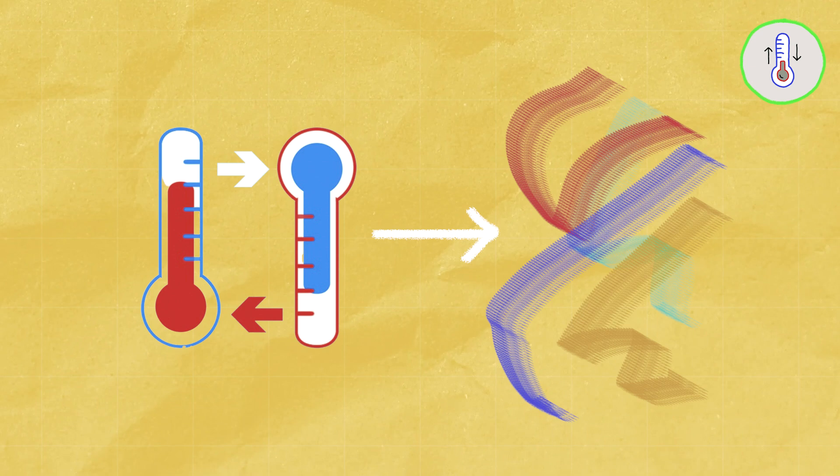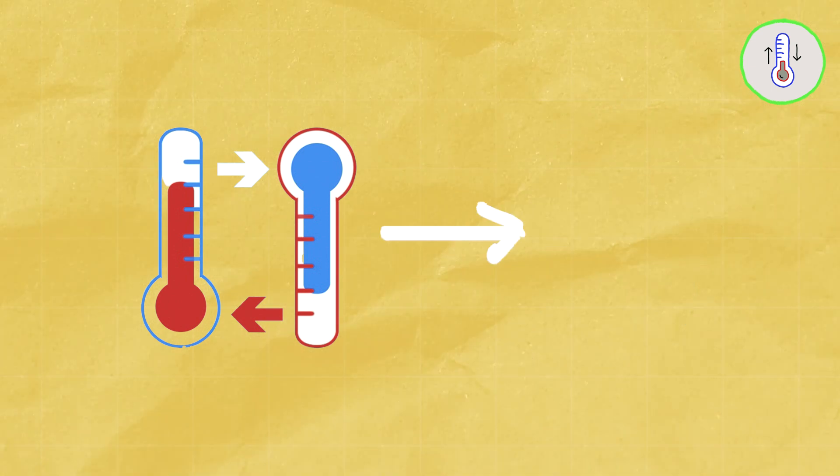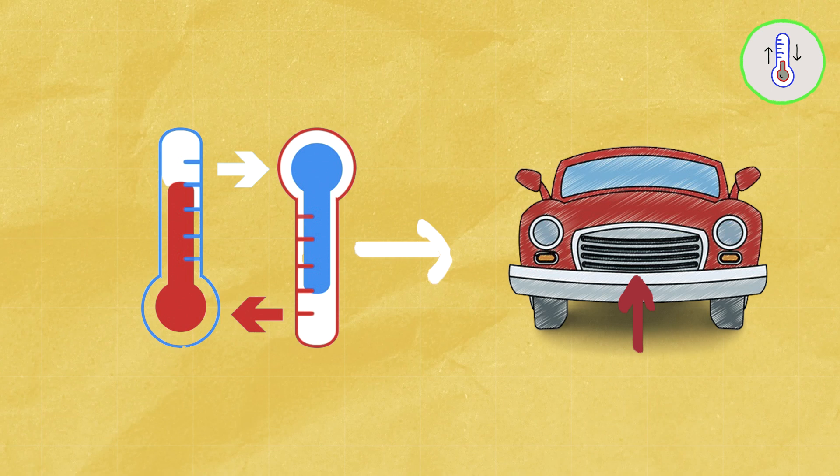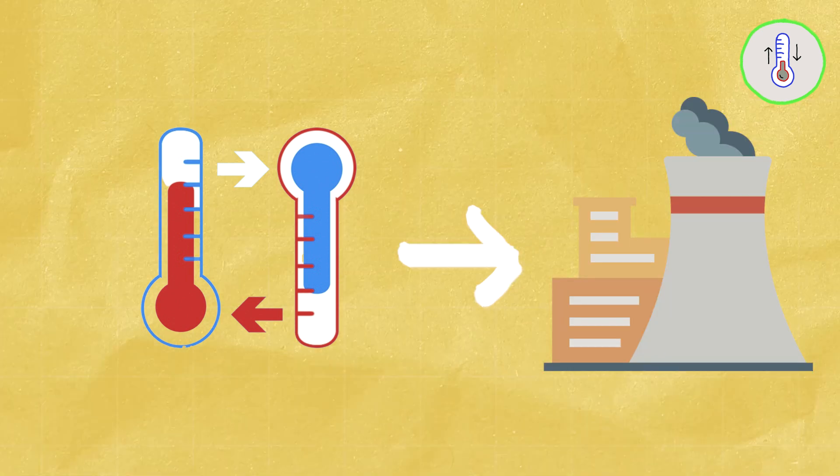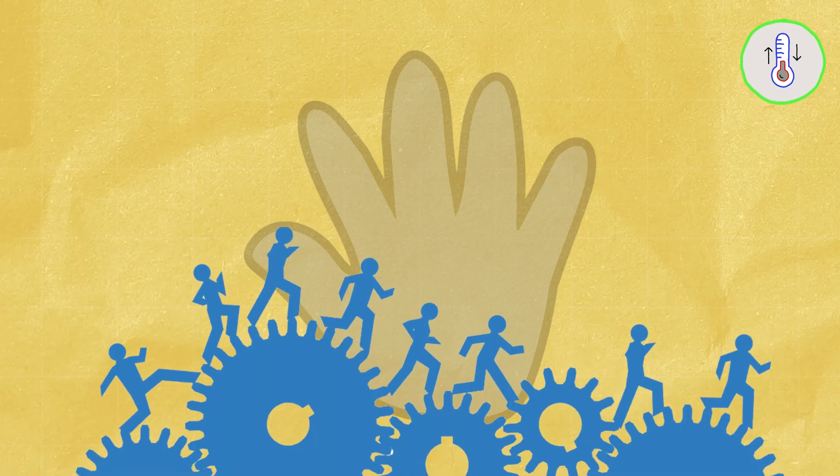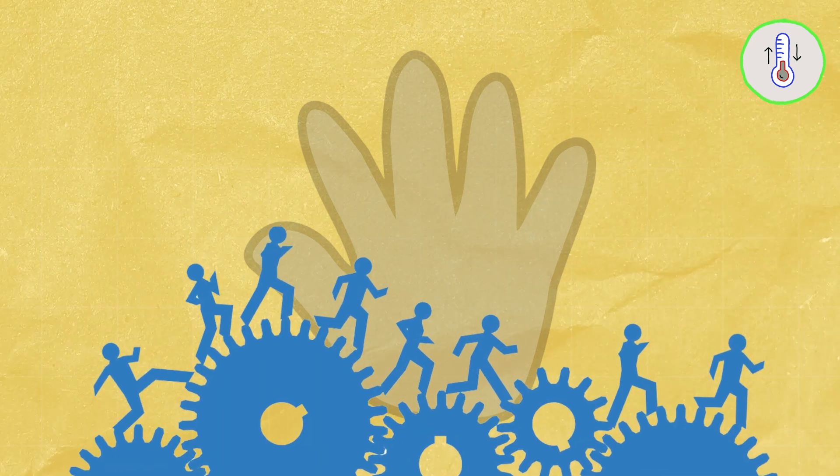Thermodynamics might seem abstract, but it has real-world applications everywhere. It helps us understand how refrigerators work by transferring heat from the inside to the outside, why car engines need radiators to get rid of excess heat, and even the efficiency of power plants. It's the invisible hand behind many of the technologies that shape our world.